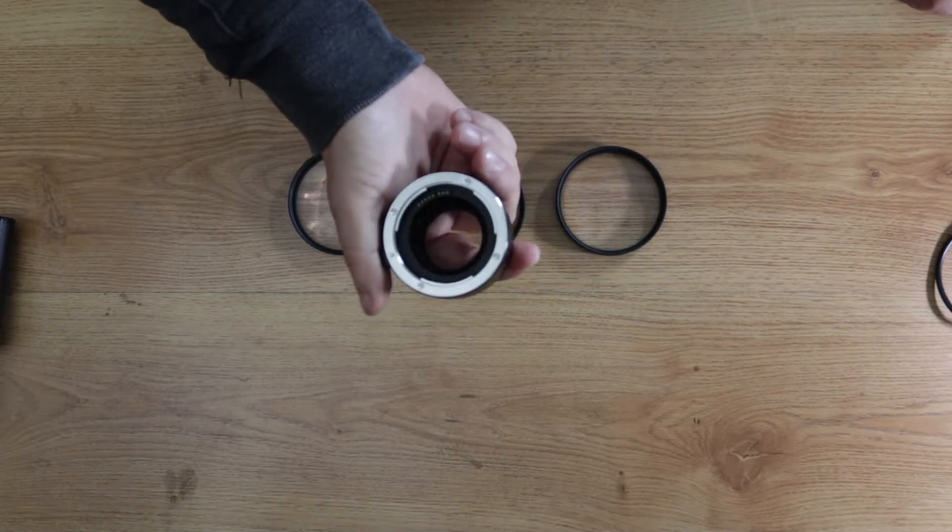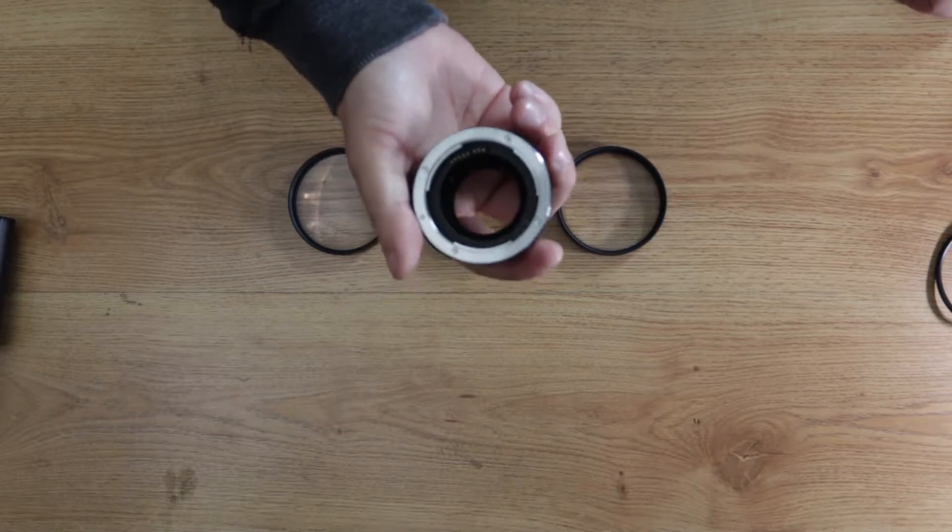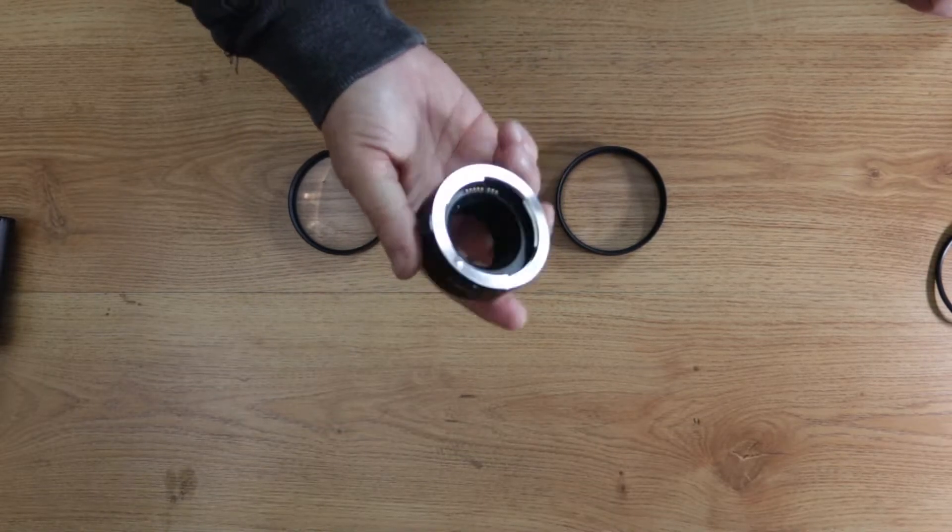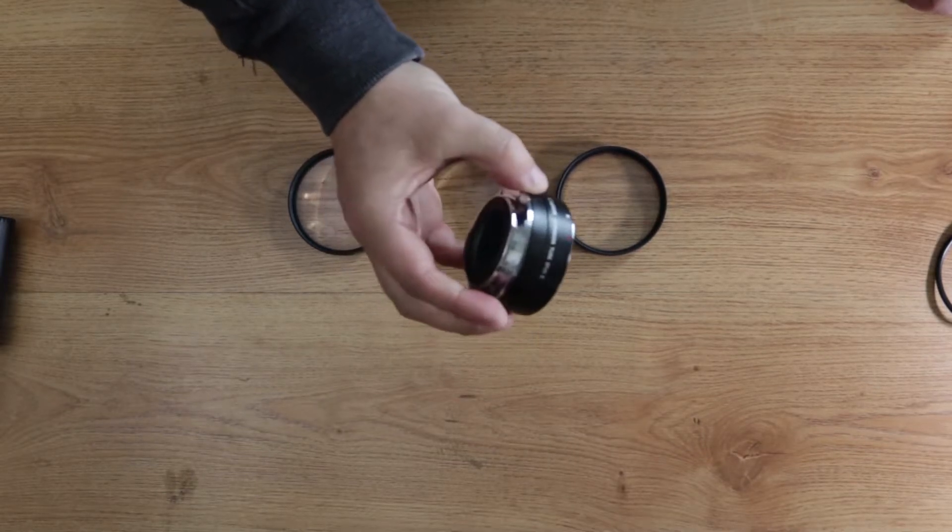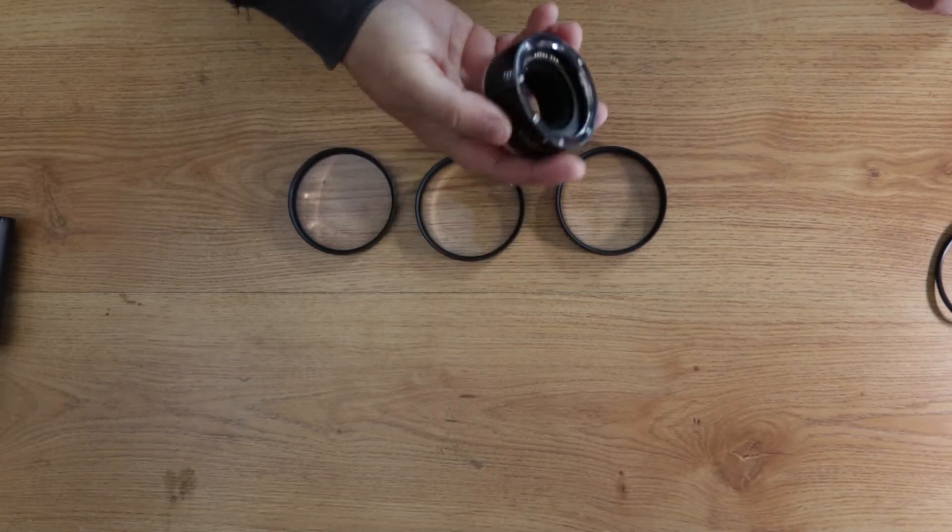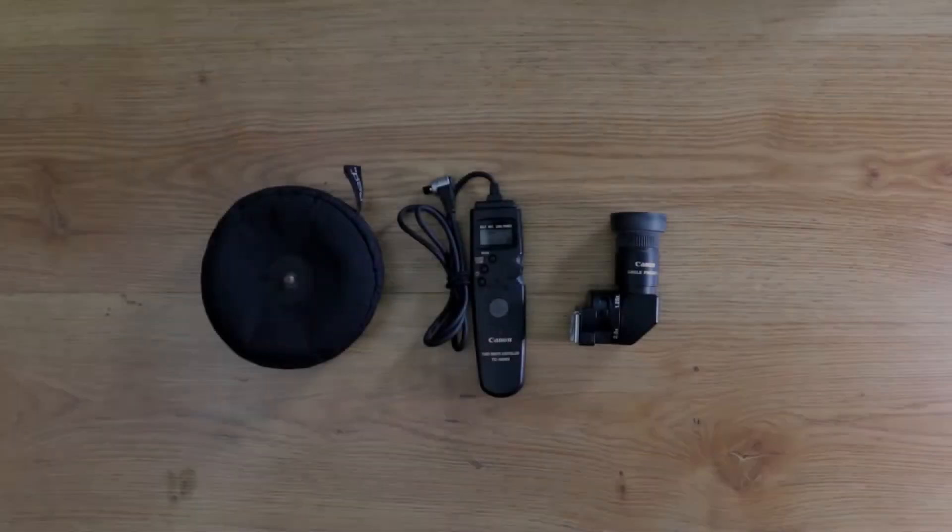Autofocus and image stabilizer. If you have an image stabilized lens, that's all going to transfer through the electronic pins in this and you're still able to utilize it, focus, and meter exactly like you would without it.